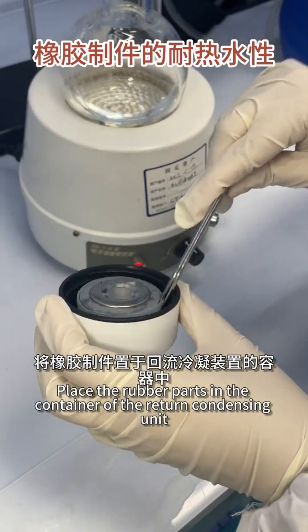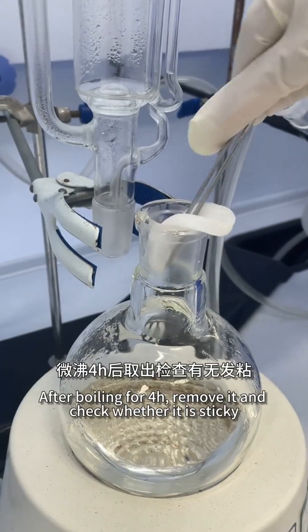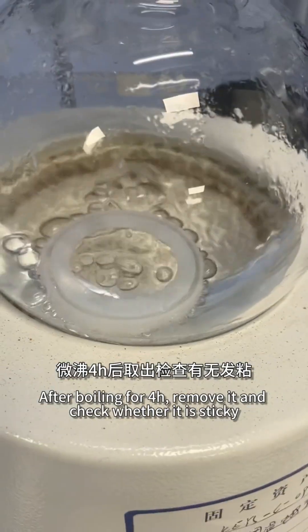Place the rubber parts in the container of the reflux condensing unit. After boiling for 4 hours, remove and check whether it is sticky.